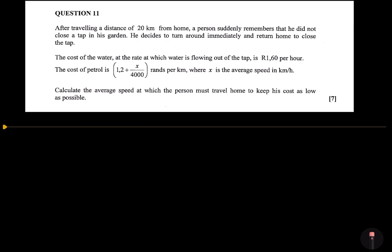It says after traveling a distance of 20 kilometers from home, a person suddenly remembers that he did not close a tap in his garden. He decides to turn around immediately and return home to close the tap. The cost of the water, at the rate at which water is flowing out of the tap, is 1.60 per hour. The cost of the petrol is 1.2 plus x/4000 rands per kilometer, where x is the average speed in kilometers per hour. They say calculate the average speed at which the person must travel home to keep the cost as low as possible.